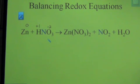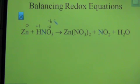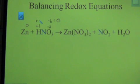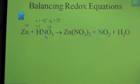Here we have 3 oxygens, so we're trying to balance out −6. Because this is neutral, everything has to add up to zero. Hydrogen contributes +1 toward balancing out that −6, so nitrogen in the middle would have to be +5. So the oxidation number of nitrogen in the middle is +5.